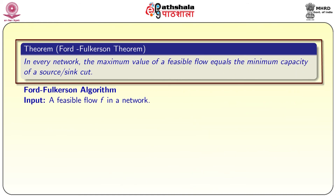We are going to state an important theorem for network flows. The Ford-Fulkerson theorem: in every network, the maximum value of the feasible flow is equal to the minimum capacity of a source-sink cut. We are going to give an algorithm for this procedure.